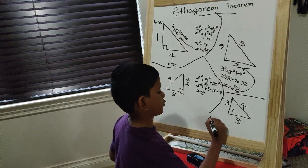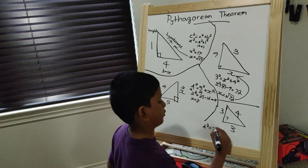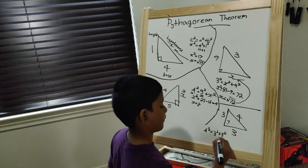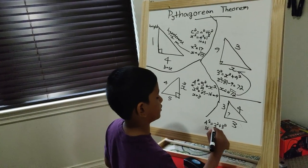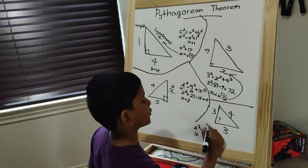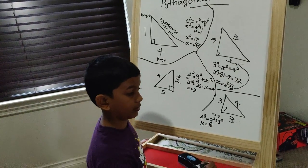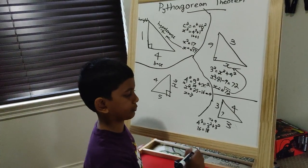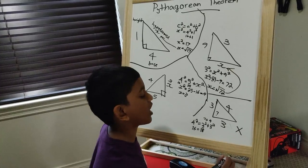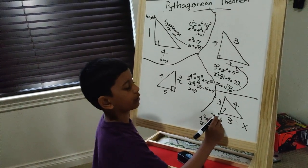So, if the hypotenuse is 4, then 4² equals 3² plus 3². 4² is 16, 3² is 9, so this plus 9 equals 18. Well, guess what? There are two different answers: 16 and 18. So this is not a right triangle.